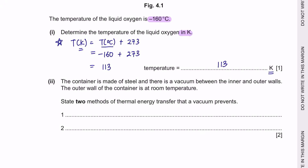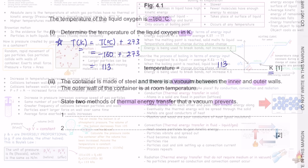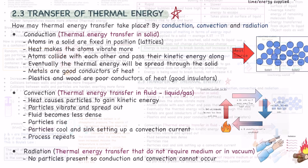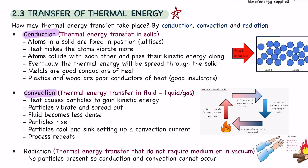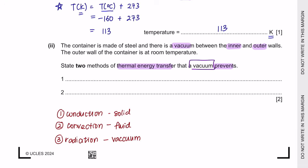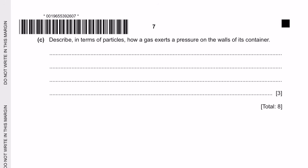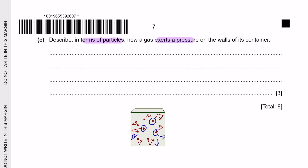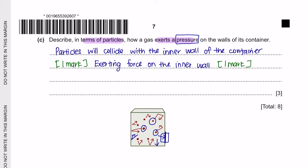Part 2: The container has a vacuum between inner and outer walls. State two methods of thermal energy transfer that a vacuum prevents. There are three methods: conduction (in solids), convection (in fluids), and radiation (in a vacuum). Since a vacuum has no medium, it prevents conduction and convection. Question C: Gas particles collide with each other and with the inner wall, exerting a force on it. Pressure is force per unit area — that is how gas exerts pressure on the container walls.